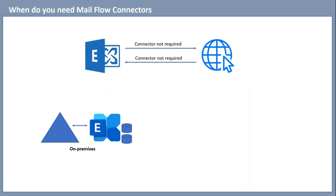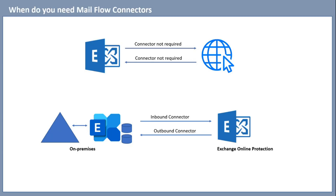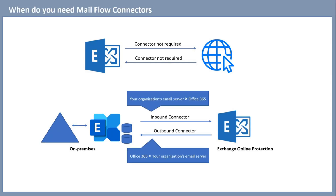The first scenario where you need a Mailflow Connector is if you have an on-premises Exchange Server where all mailboxes are hosted, and you are using Exchange Online Protection (EOP) to scan emails received and sent from that on-premises Exchange Server. In this scenario, you need two Mailflow Connectors in Exchange Online: an inbound connector from your organization's email server to Office 365, and an outbound connector from Office 365 to your organization's email server.